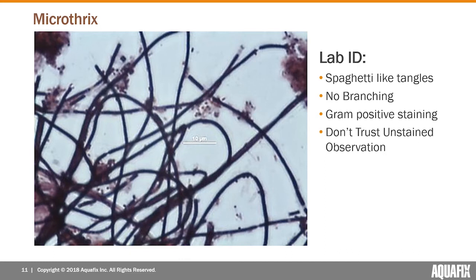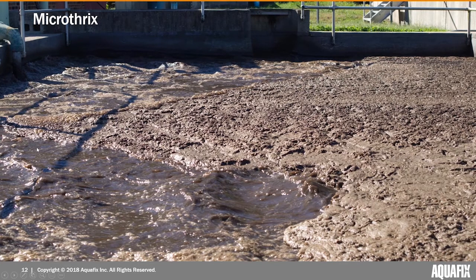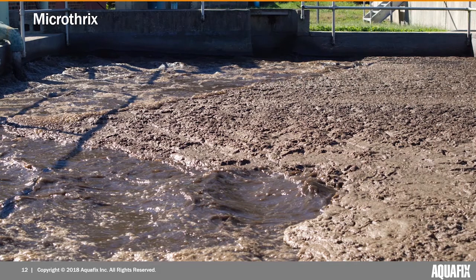With Nocardia you can sometimes ID it without staining; with Microthrix we're much more hesitant to trust a positive ID without the stain. In this field shot of Microthrix, it's pretty dense and stable — maybe 50% surface coverage, three to four inches thick. The color of the foam on the surface tends to be more reflective of your sludge color. This plant has a very chocolatey brown mixed liquor, and since the filaments trap that mixed liquor and bring it to the surface, the foam color reflects it.